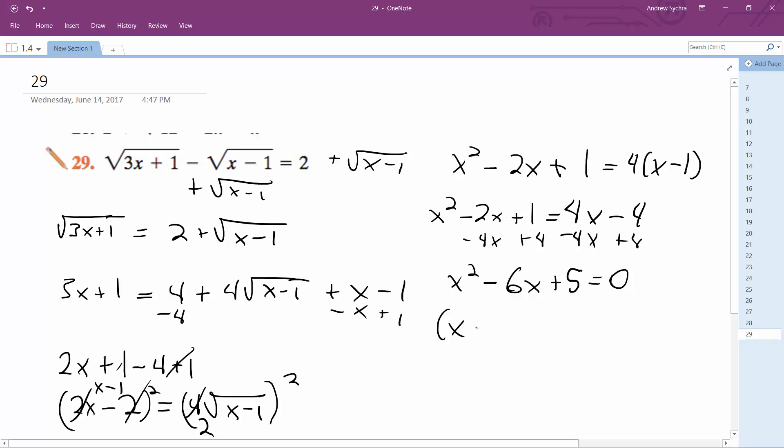So this breaks down to x minus 5, x minus 1 equals 0. x is equal to 1 and 5.